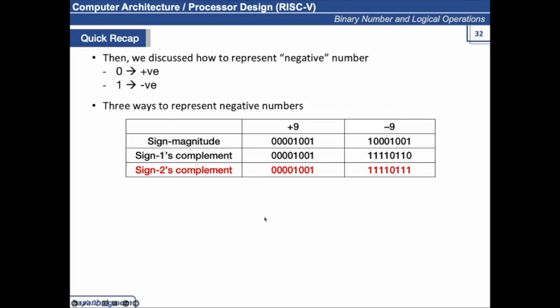The three ways to represent a negative number are: sign magnitude, sign 1's complement, and sign 2's complement. For example with +9 and -9: since +9 is positive, it's represented the same in all three methods. For minus 9 in sign magnitude, the leftmost bit is reserved only to represent sign — it does not represent weight. A 1 at the leftmost bit indicates the number is negative, and 1001 represents the magnitude 9, giving negative 9.